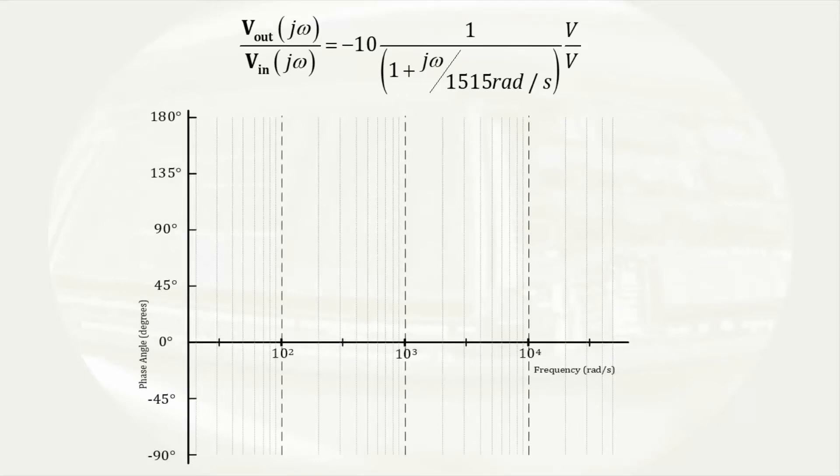Looking at the transfer function, we can see the easy term to handle is a minus 10. A constant has no phase angle, but a negative sign corresponds to a change of 180 degrees. There is no frequency dependence, so we will have a horizontal line at 180 degrees. For the term with a frequency dependence, we have already discussed that at 1515 radians per second, the phase angle is 135 degrees.